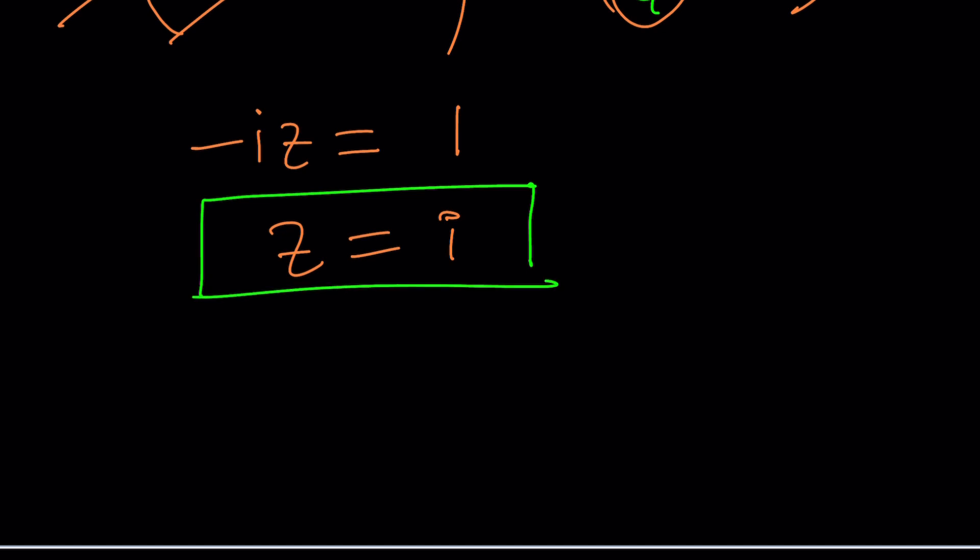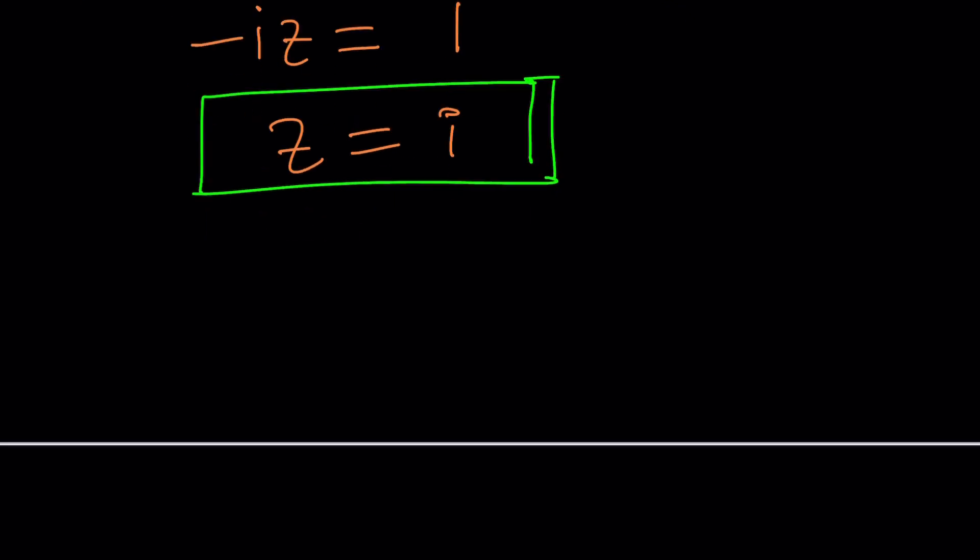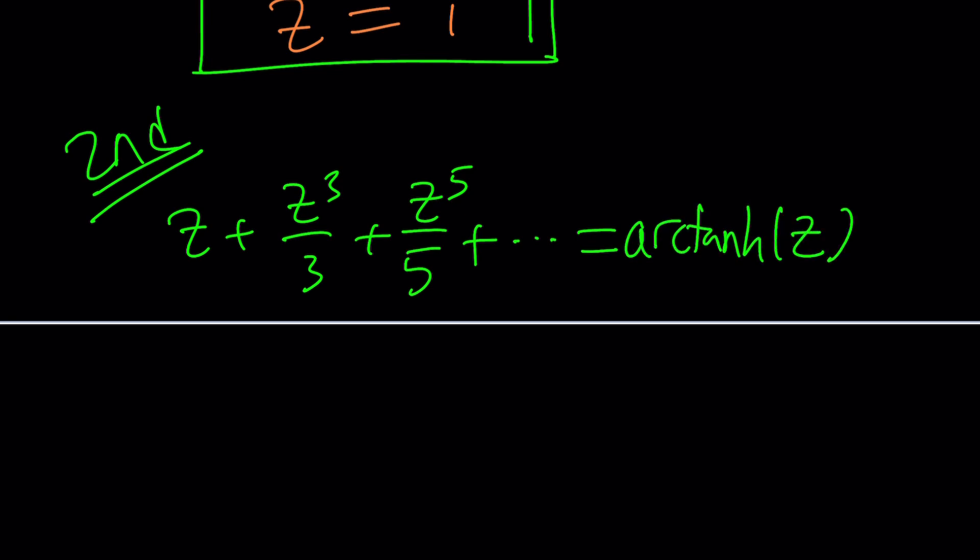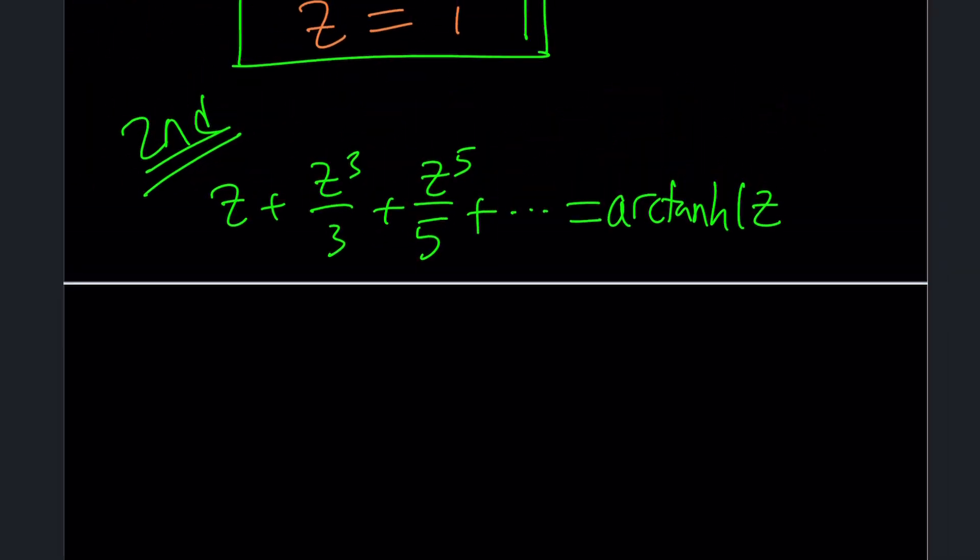How do you know that's the only solution? Well that looks like it and I'm going to check my results with Wolfram Alpha. But before that let's look at the second method. By the way, z plus z cubed over 3 plus z to the fifth over 5 plus dot dot dot is equivalent to arctanh z.